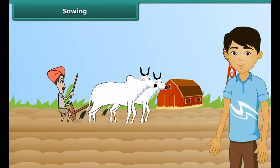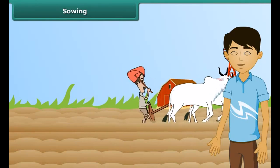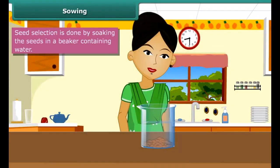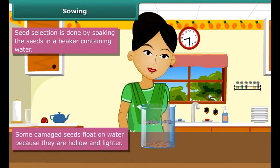Once plowing is done, the next step is sowing. Before sowing, farmers select good quality seeds to get high yields. Have you noticed putting some grains in a vessel with water? Some seeds start to float — damaged seeds float because they are hollow and hence lighter. This is a good method for separating healthy seeds from damaged ones.